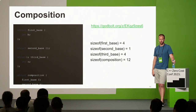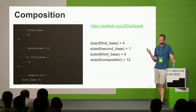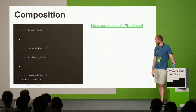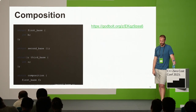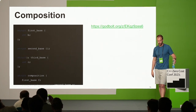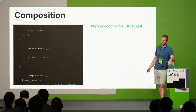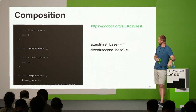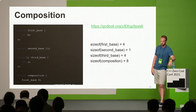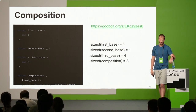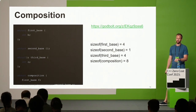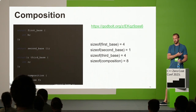So they lied — we can't do empty base class optimization with composition. Or can we? There's the attribute `[[no_unique_address]]`. When applied to second_base, the total size drops to eight. This attribute was added in C++20 and perfectly explains what's happening: second_base has no state, requires no space, so it doesn't need a unique address. It still gets an address, but the address can be shared with some other object.